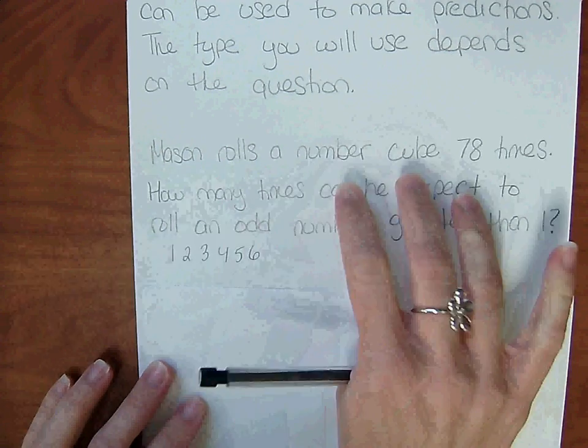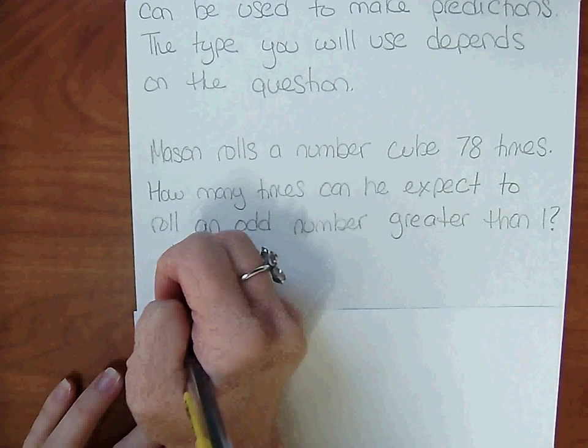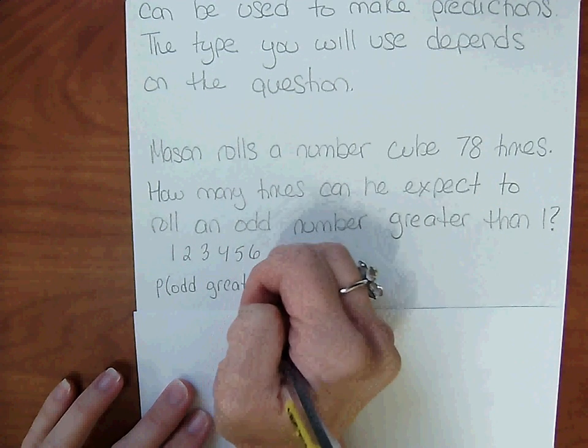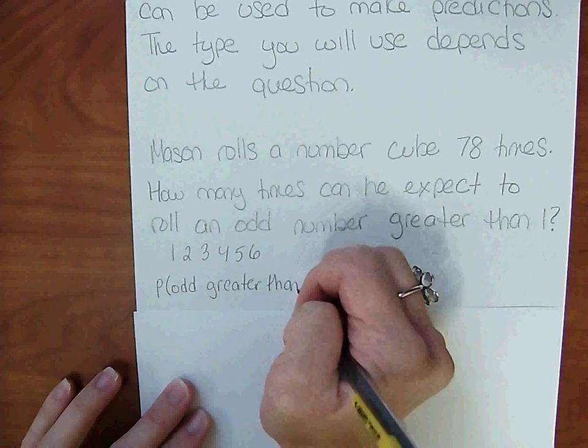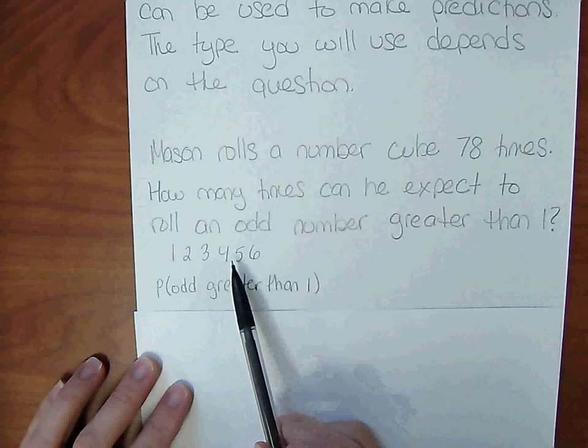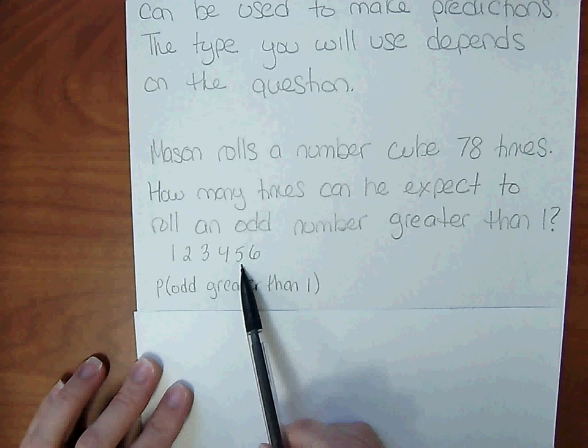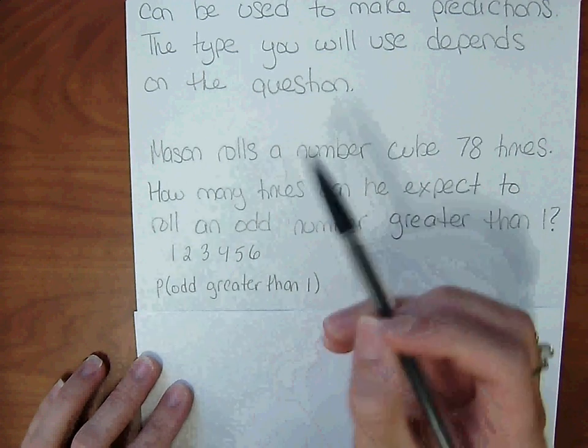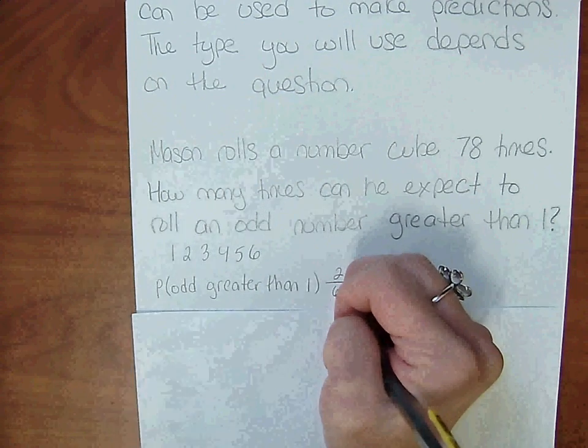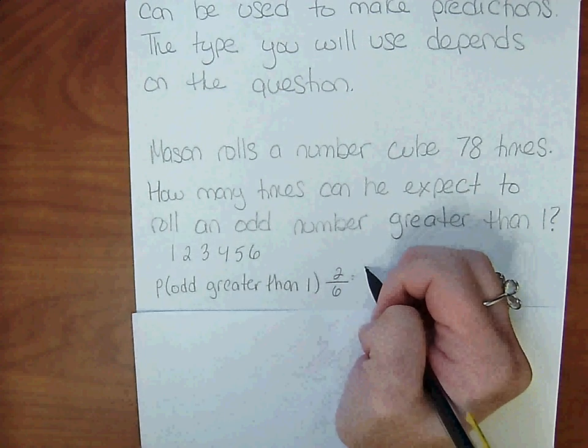So we need to find the probability of an odd greater than 1. The odd numbers are 1, 3, and 5. So greater than 1 would just be the 3 and the 5. So that's going to happen 2 out of 6 ways, which simplifies to 1/3.